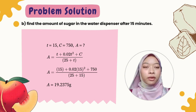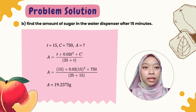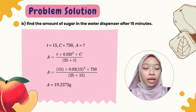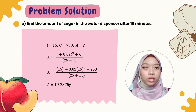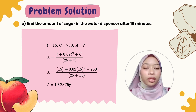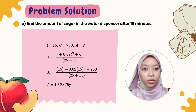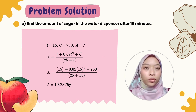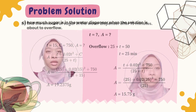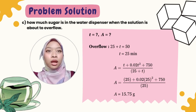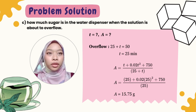For part B, we find the amount of sugar after 15 minutes. Using t equals 15 and C equals 750, we substitute into A equals (t + 0.02t² + 750) / (25 + t). Substituting t equals 15 gives A equals approximately 19.2375 grams.